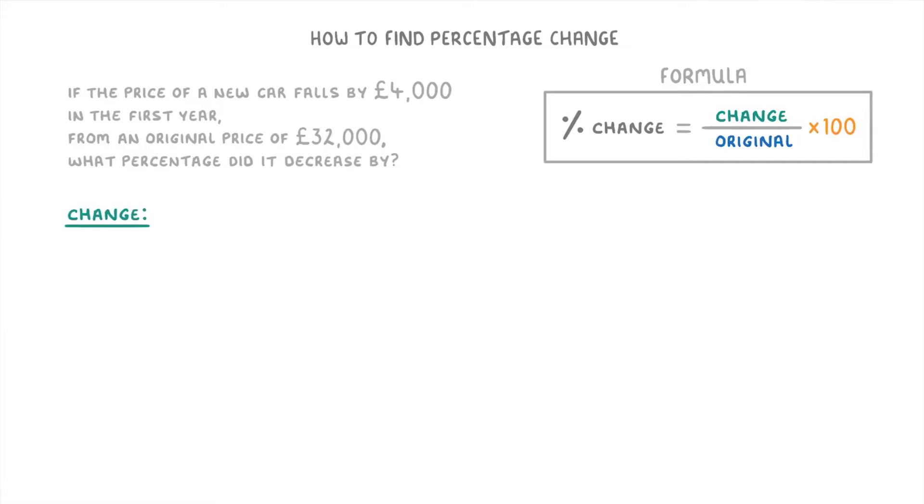In this question, the change refers to the £4,000, because that's the amount that the price has fallen or changed by. Then the original price is easy to find as the question tells us it's £32,000.